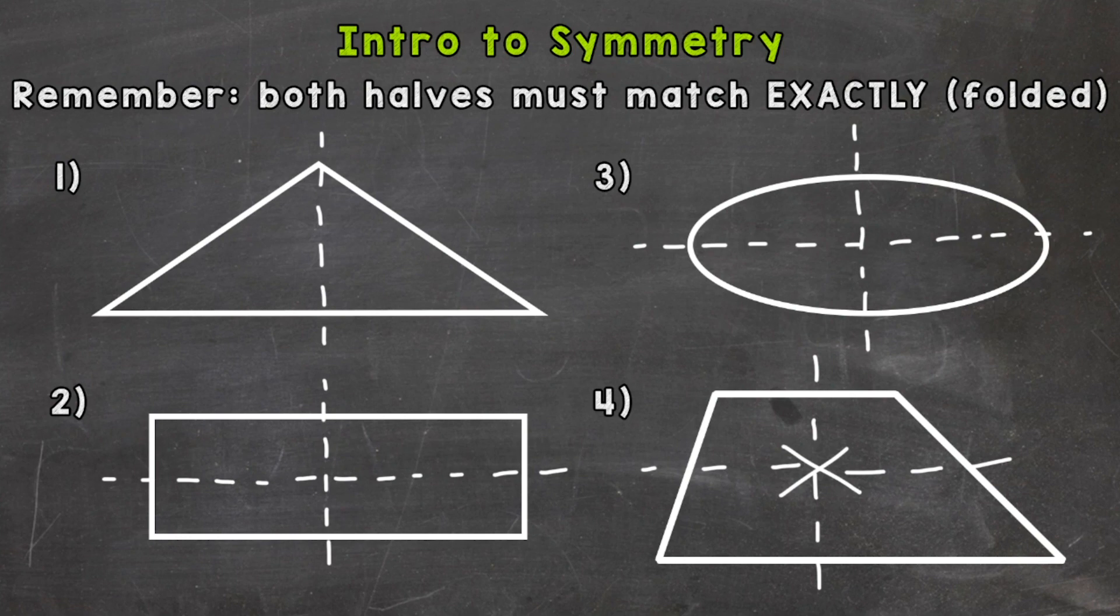When you're looking for lines of symmetry, you can go in any direction you want. For example, we could go diagonally, but that's not going to work for this shape either. We can try as many as we wanted for number four, but we're not going to find a line of symmetry.